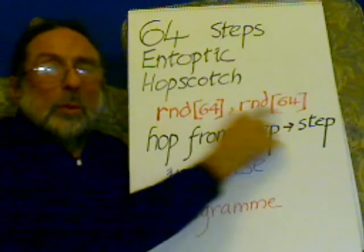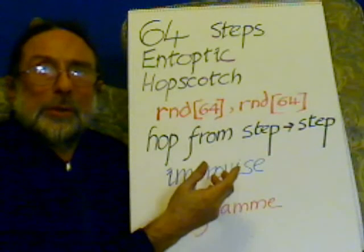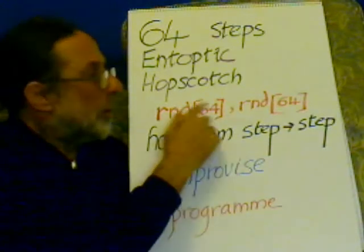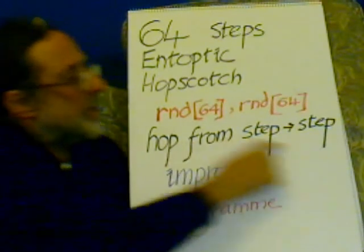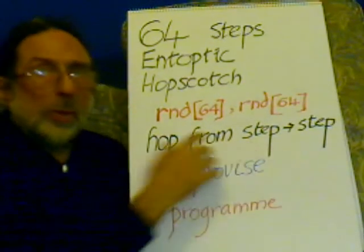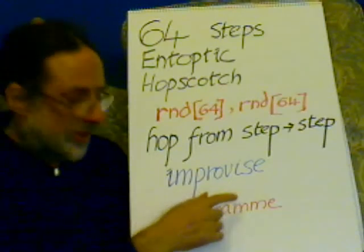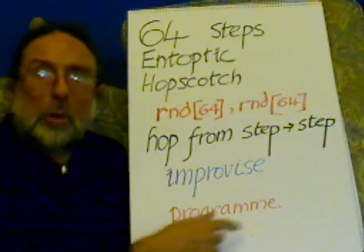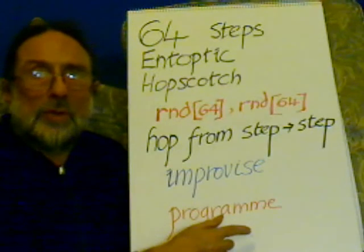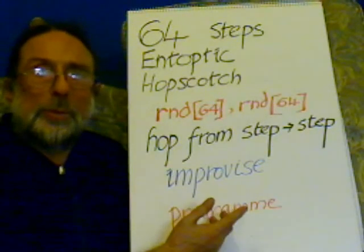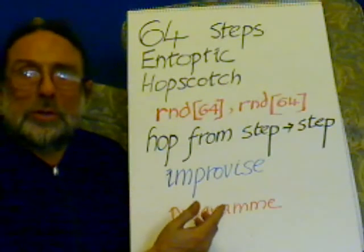Cards — one of 64, one of 64. It can be the same number, which is like hopping on the spot, but you've got to hop from step to step. So you understand the steps, and then you improvise or you program the connection between one function and the other function. That's what happens in our minds: one function triggers off some other function.